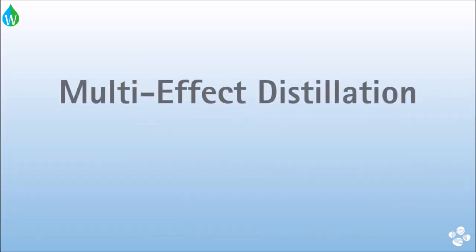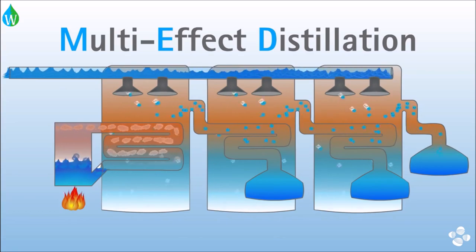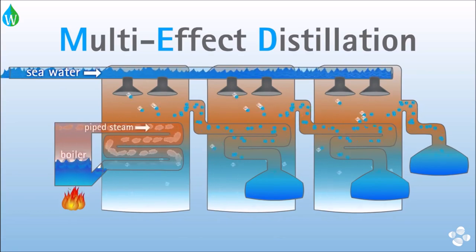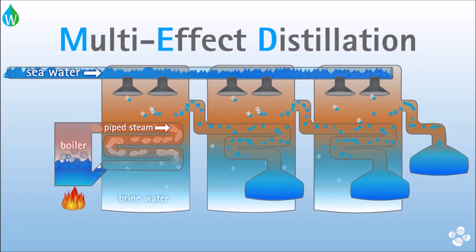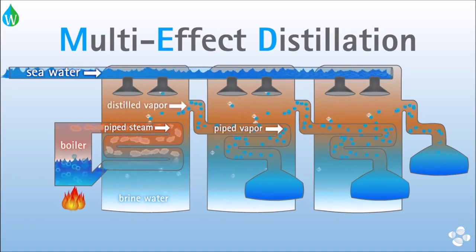Let's start with the existing desalination method. Multi-effect distillation is an evaporation technique that is currently widely used to desalinate water. In this process, the seawater is sprayed over heated pipes, which evaporate only the clean water. This hot water vapor is then used to heat the next stage of the evaporation process.